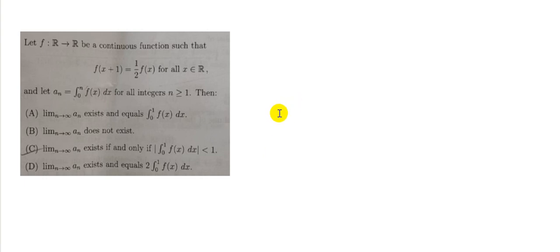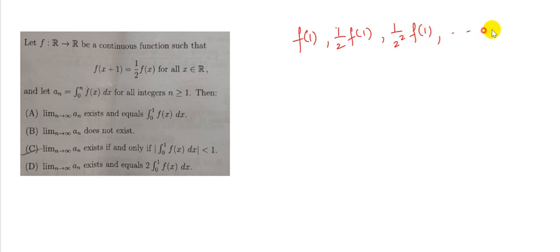The third question: let f be a continuous function such that f(x+1) = ½f(x) for all x, and let a_n be the integral from 0 to n of f(x)dx for all integers n ≥ 1. Analyzing this function: f(1), then ½f(1), then (1/2²)f(1), and so on — the nth term is (1/2^(n−1))·f(1). This is a geometric progression.